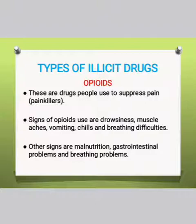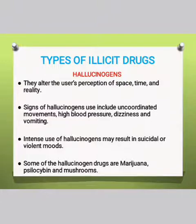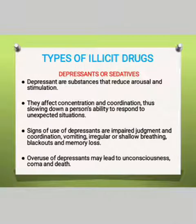Another type of illicit drugs are called hallucinogens. These are drugs that alter our perception of space, time, and reality. People take them so that they feel they are living in a different world. Signs that individuals are using hallucinogens include uncoordinated movements, high blood pressure, dizziness, and vomiting. Overuse or overdose can result in suicidal thoughts as well as the development of violent moods. One of the most notable hallucinogens is marijuana and mushrooms.